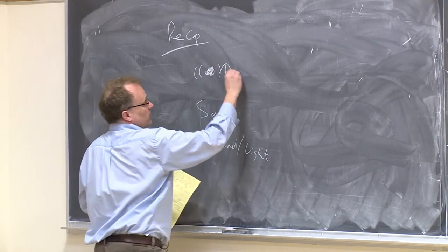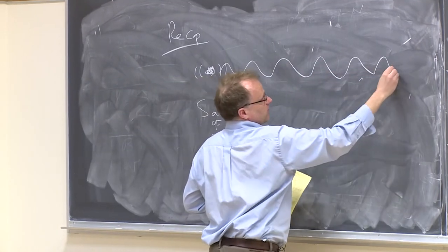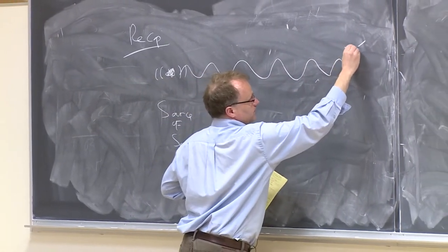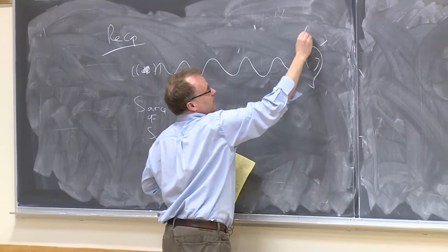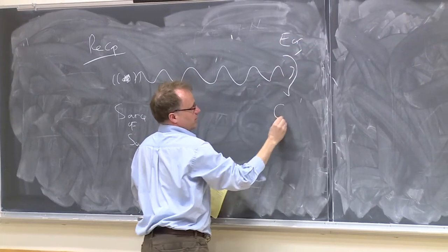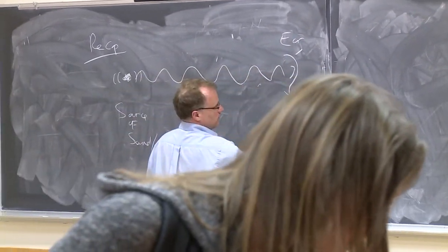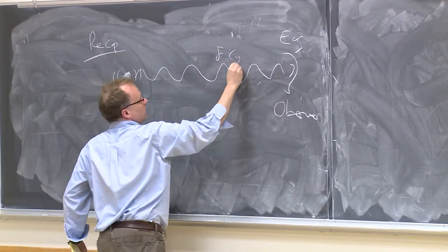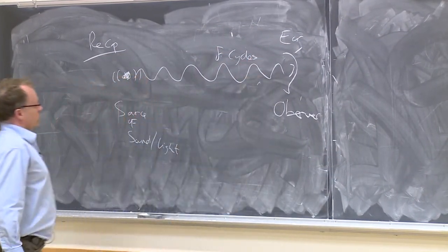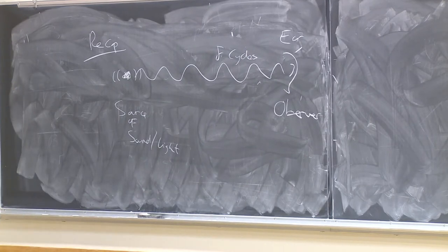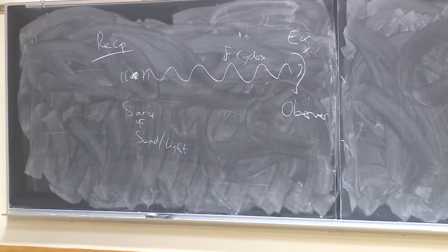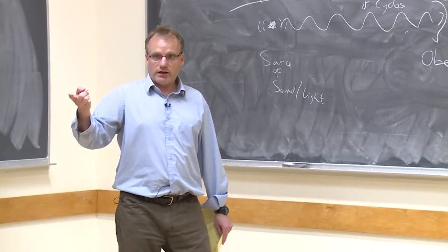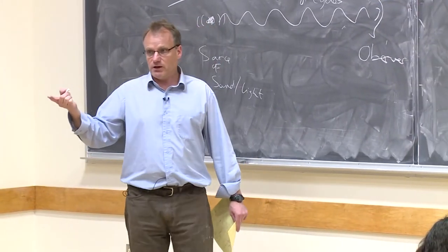And if the source sends out a number of cycles per second, and if you're listening, this is an ear, or an observer. So if you have a source of waves every second, that source is going to send out f cycles by definition. That's what f means.